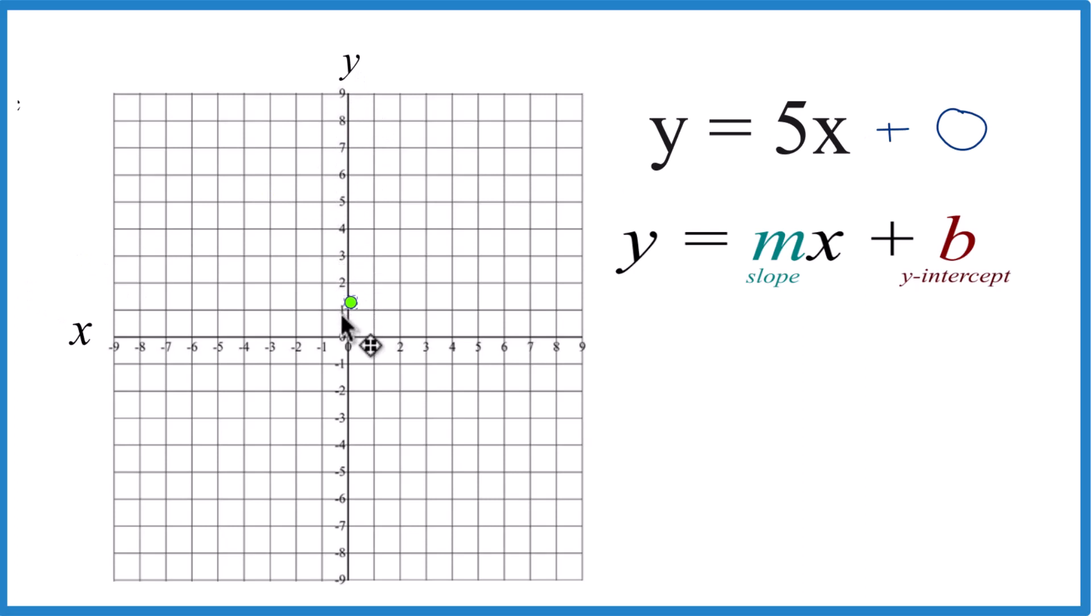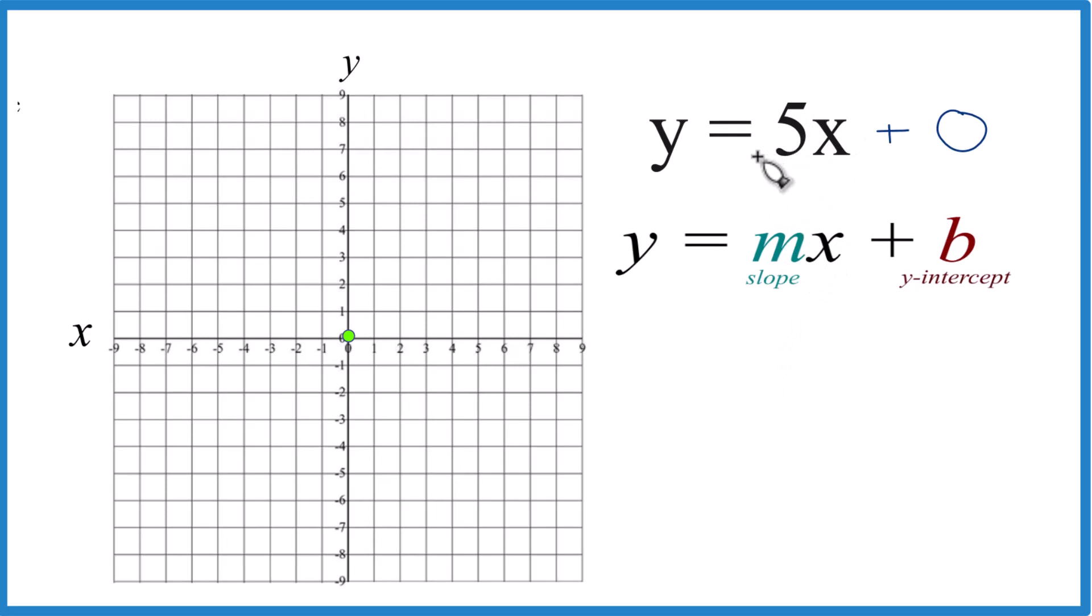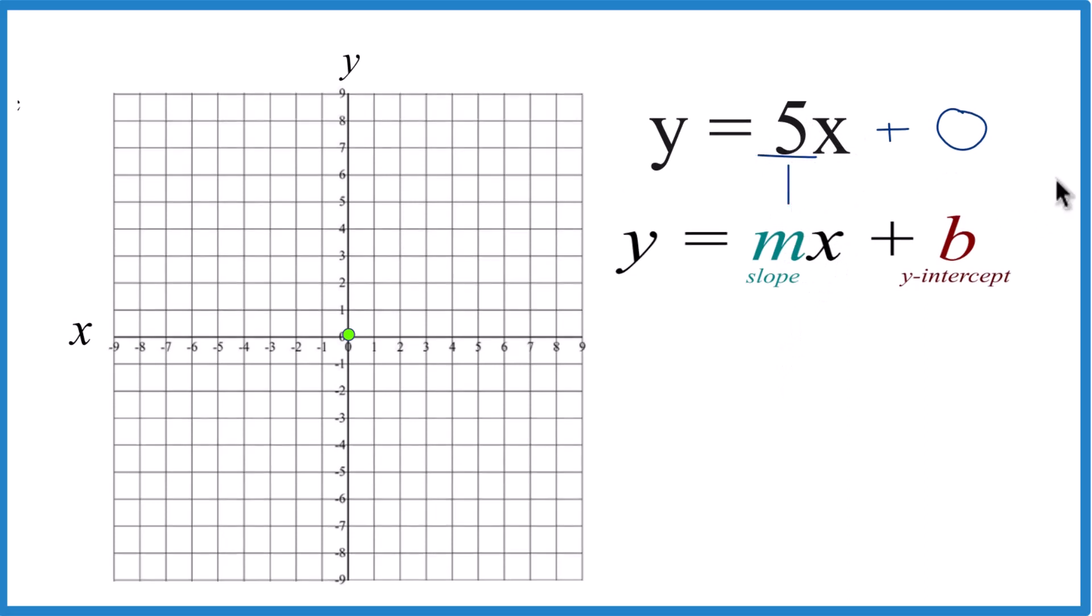That's where we cross the y-axis right here. For the slope, we have m equals 5, but it's nice to think about this as 5 over 1 because now you can call it rise over run.